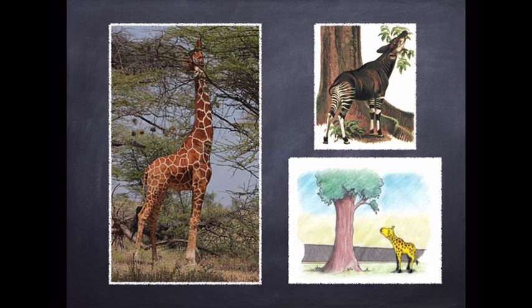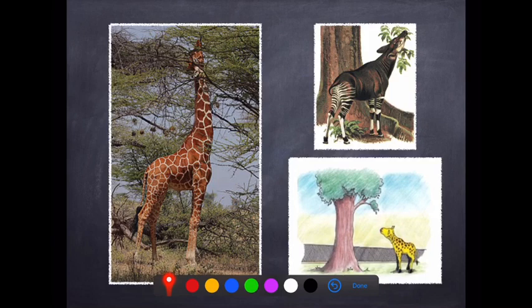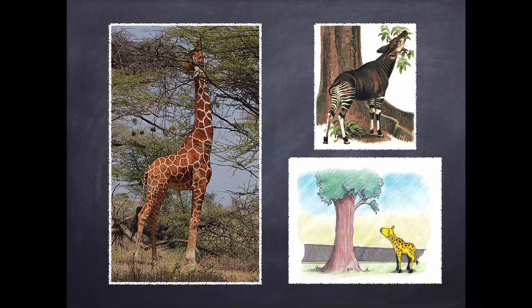Lamarck said that obviously the short giraffes down here were stretching and stretching their necks to try and reach these leaves. Because they were using their necks frequently, their necks got longer. As their necks got longer, his second law is that those with the longer necks then passed on those acquired characteristics to their children. Now, an acquired characteristic is something that you get during your lifetime. So you stretch your neck and your neck gets longer during your lifetime. That is an acquired characteristic, which then you pass on to your children.